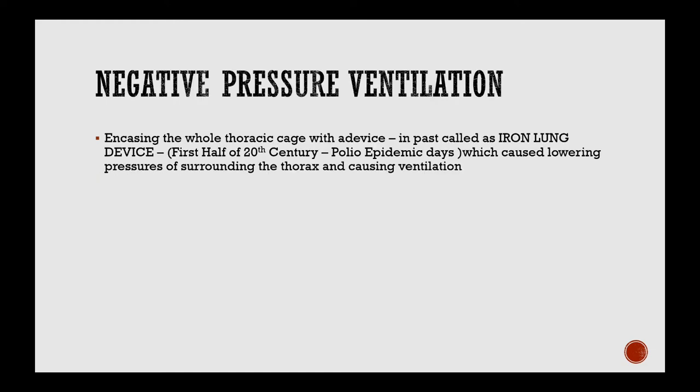Negative pressure ventilation was done in earlier times, wherein an iron lung chamber was used in the first half of the 20th century. It is no longer used today. It worked by lowering the pressure surrounding the thorax by creating a negative pressure across the thorax from a chamber.